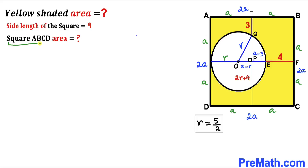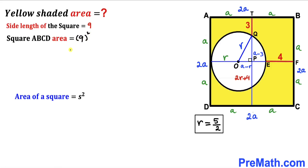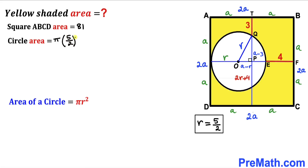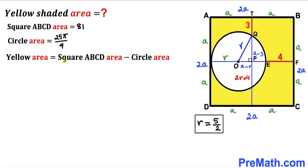The area of square ABCD uses the formula area = s², where s = 9, so the area is 9² = 81 square units. For the circle, using area = πr² with r = 5/2: the circle area = π × (5/2)² = 25π/4.